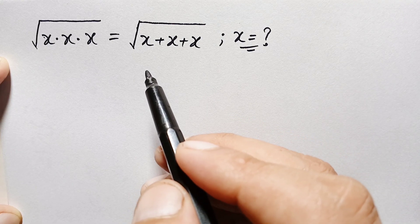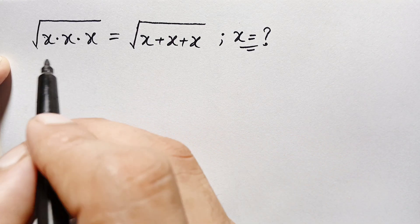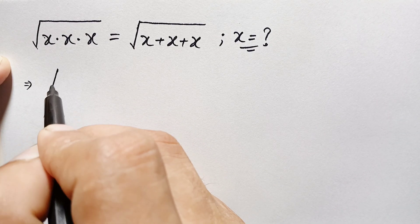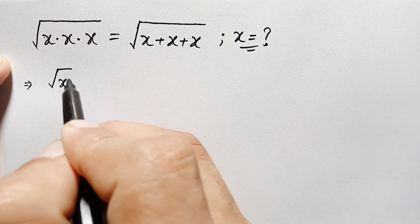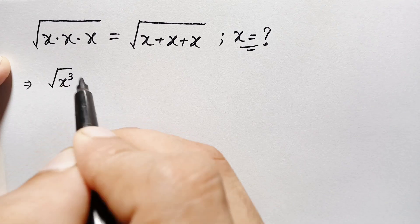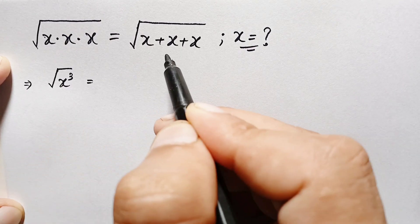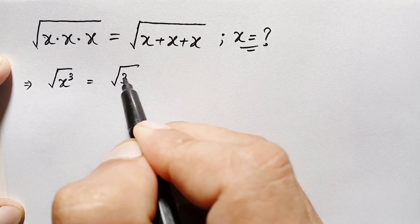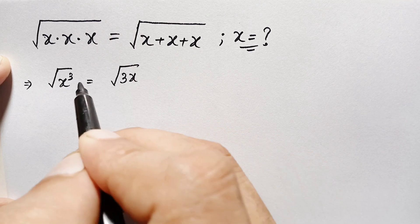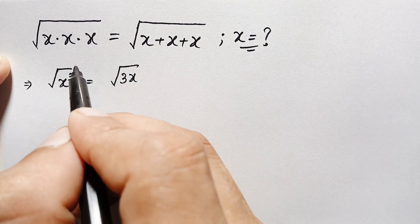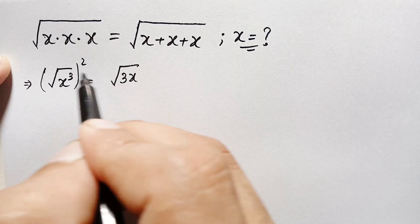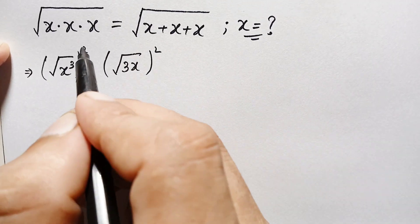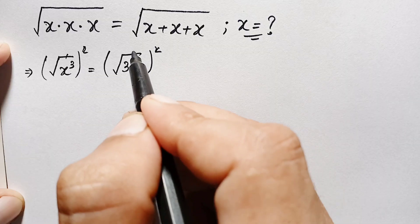To solve this, on the left hand side x is multiplied three times, so we can write this as x cubed. On the right hand side, x is added three times, so we can write that as the square root of 3x. Then we take the square on both sides to eliminate the square roots from both sides.